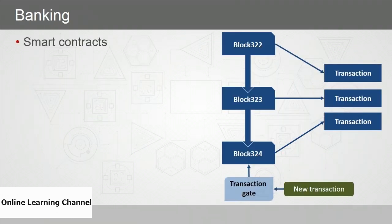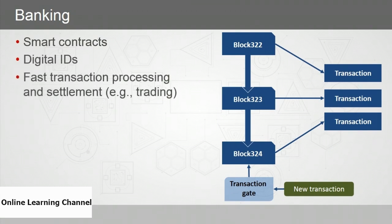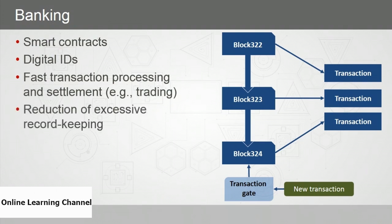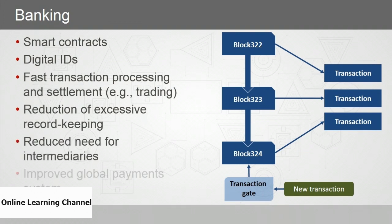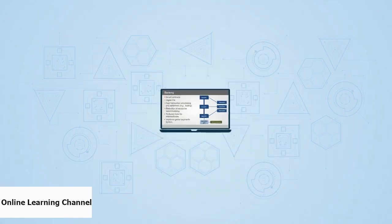The banking industry is focusing on smart contracts, digital IDs, faster transaction processing and settlement — such as trading — which is important because blockchain transactions by design affect real-time change of ownership. Banks see a reduction of excessive record-keeping, a reduced need for intermediaries, and an improved global payments system.